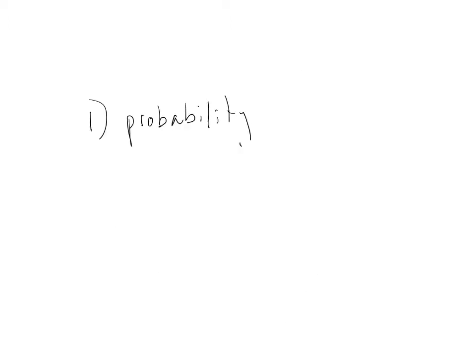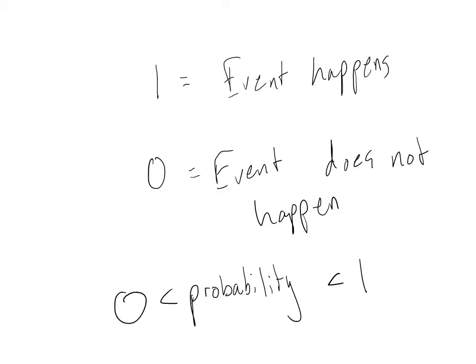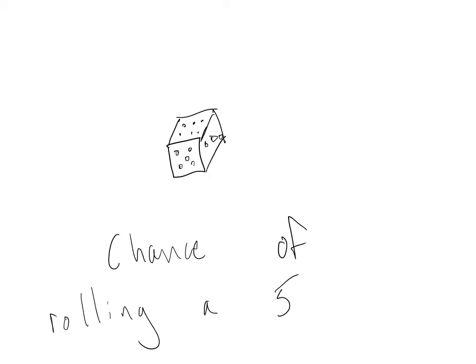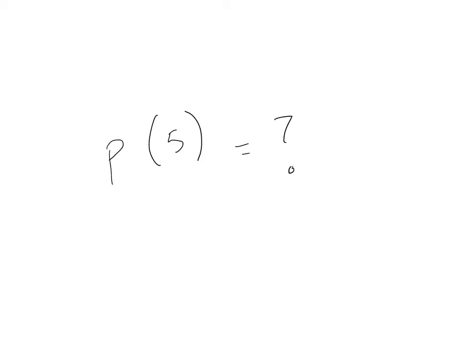Let's start with probability. If one means that an event happened and zero means that the event does not happen, probability lies in the middle. Probability deals with the uncertain, where we don't know whether something is going to happen or not happen. For example, say we roll a dice and we're interested in the chance of rolling a five.